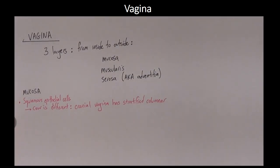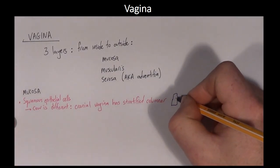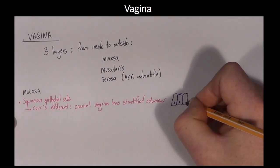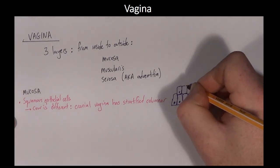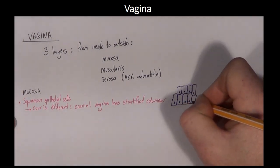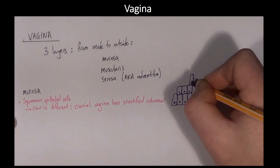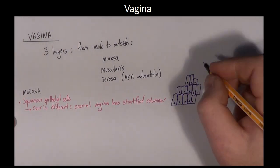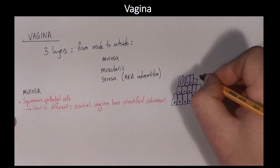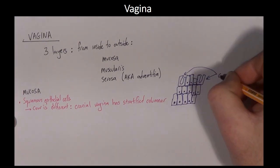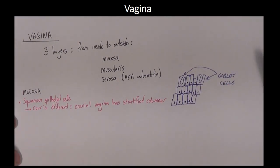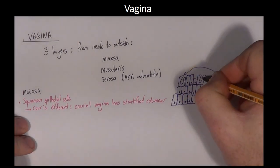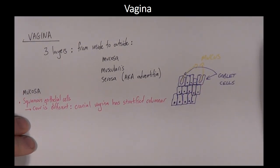In bitches and queens, the stage of the oestrus cycle has a significant effect on the thickness and the turnover rate of the cells that form the mucosa. This can be used to tell very accurately where a bitch is in her oestrus cycle. You will study this in much more detail when you cover reproduction in dogs.